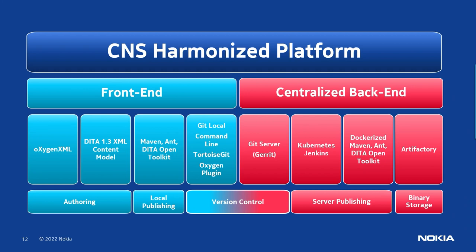On the front end, our writers use Oxygen and we're using DITA 1.3, with a combination of Maven, Ant, and DITA OT running on the client. They use Git locally, talking to a couple of Git servers in our server farm — one of them is Gerrit, which is Google's version of GitHub/GitLab. Kubernetes and Jenkins do the orchestration and scheduling. We've Dockerized the OT on the back end so it doesn't have to resolve thousands of dependencies on every startup — once resolved and put into a Docker image, you just say run and save many minutes.